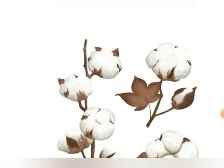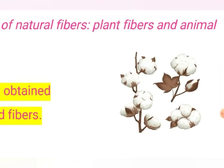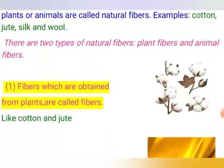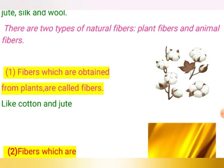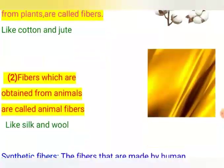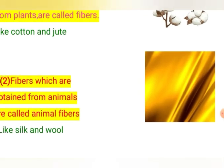Cotton fiber is obtained from cotton balls, a kind of plant. Similarly, another example of a plant fiber is jute. Fibers obtained from animals are called animal fibers, and the examples are silk and wool. The cloth shown here is made up of silk, which is obtained from the silkworm. Silkworms are reared on mulberry trees and produce silk — so silk is obtained from an insect, a worm called the silkworm, making it an animal fiber.